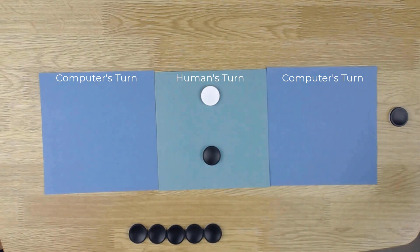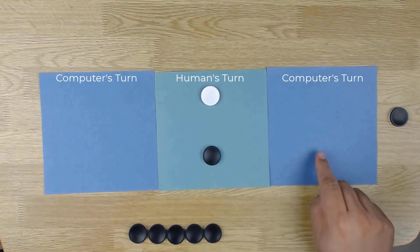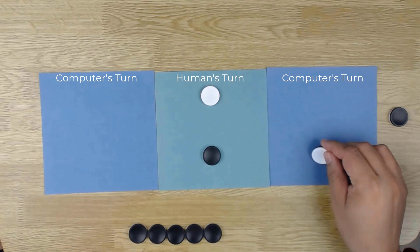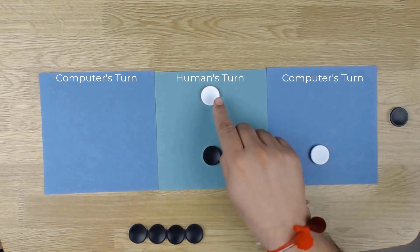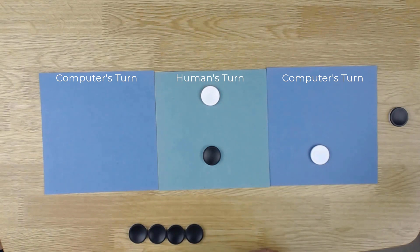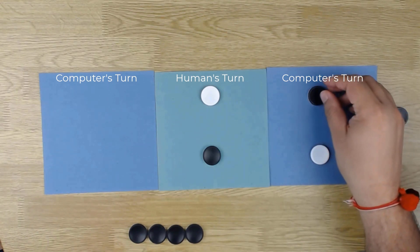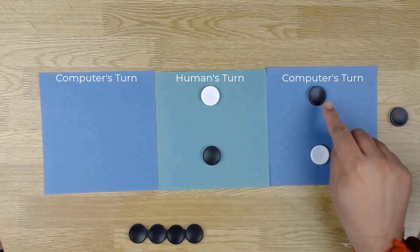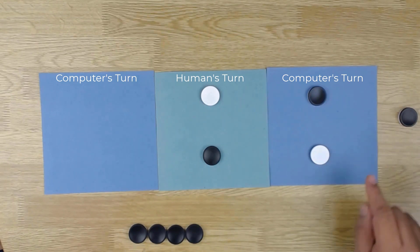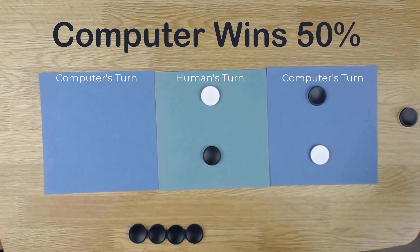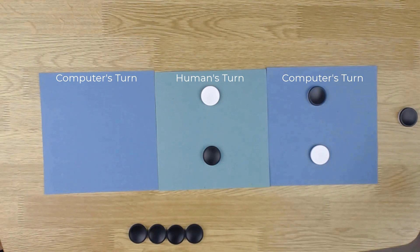Now it is computer's turn. When this coin comes over here, at that point of time, computer flips it like this. And when this coin comes over here, computer flips the coin like this. Remember, computer wins if the outcome looks like this. In this scenario, it is very clear that the winning chance of computer is only 50%. This is how the classic computer works.